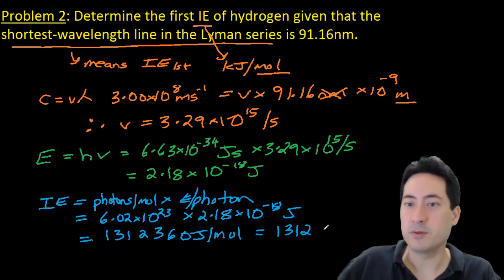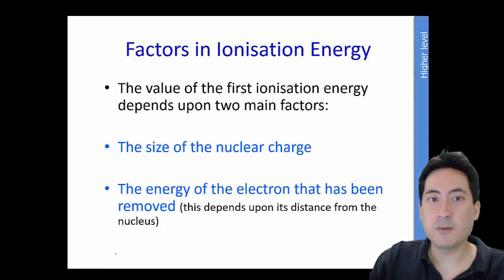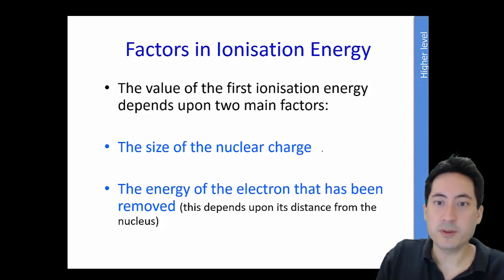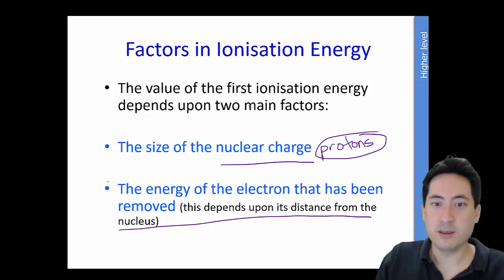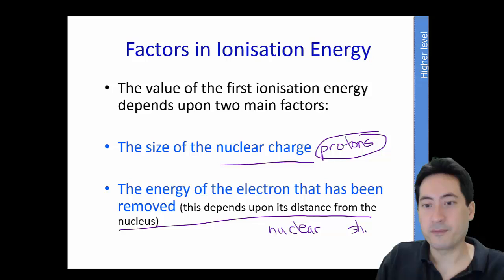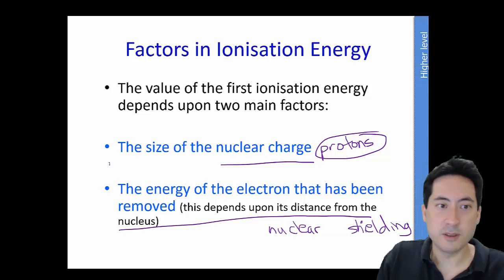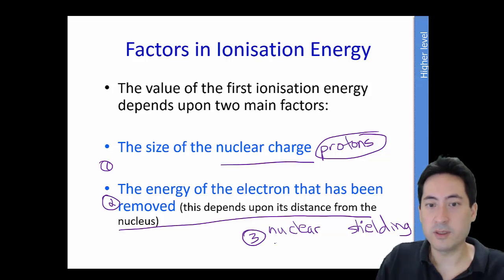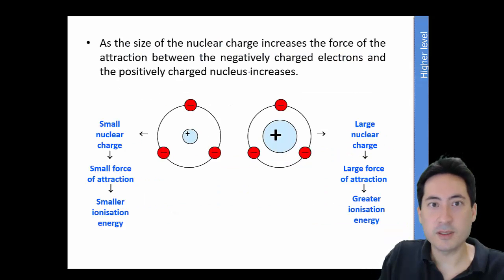Now the two most important things when considering what influences the ionization energy is how many protons are pretty much in the nucleus. So the size of the nuclear charge are words you want to use. And also the distance from the nucleus, basically. So how much energy the electron has, how much energy it is attracted, how easily it is attracted to the nucleus. Because of the distance it is and the shells that it has. Here we have the size of the nuclear charge increases. So if you have more protons in here, as you go across the periodic table, if it's the same shell, and then you're going to have an increase in ionization energy because this is going to be more attracted to it. So it's going to take more energy to remove it.